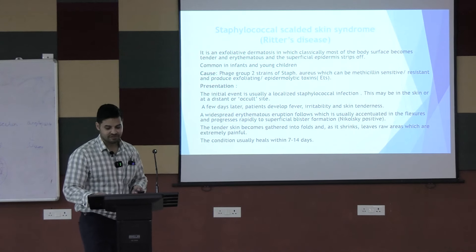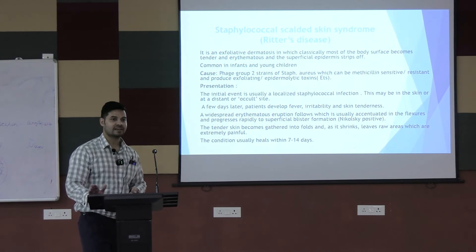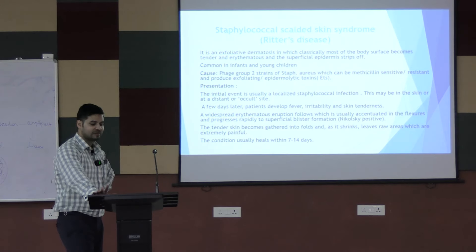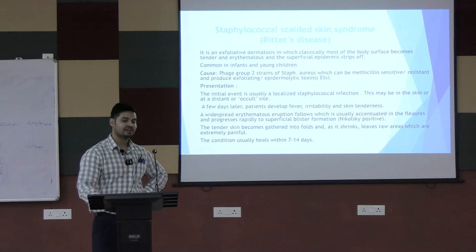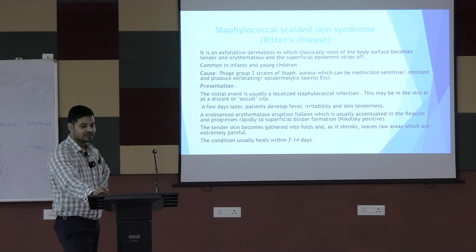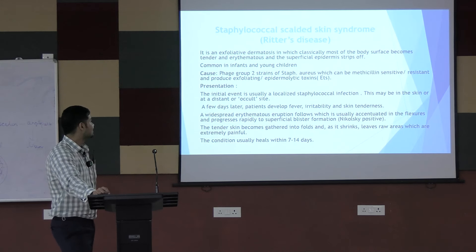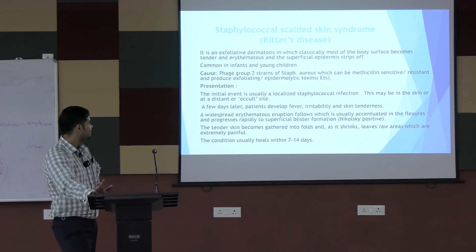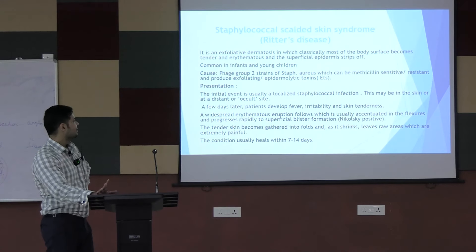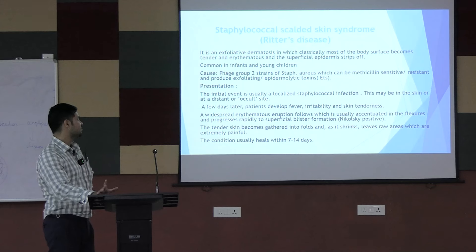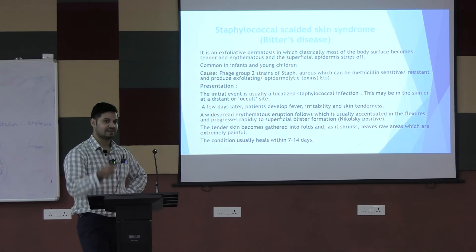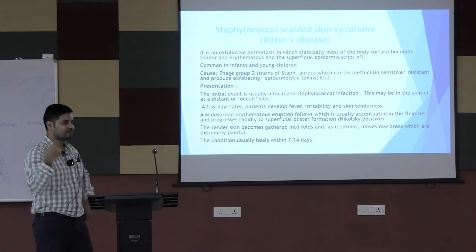Staphylococcal Scalded Skin Syndrome (SSSS), also called Ritter's disease, is a deadly exfoliative dermatosis. Unlike other bacterial skin infections, here we don't see pus or edema — instead, the upper layer of skin literally strips off in sheets. It is caused by exfoliating epidermolytic toxins from Staph aureus, which break down epidermal keratin. It is common in young children and infants, rarely in adults.